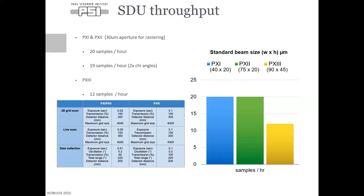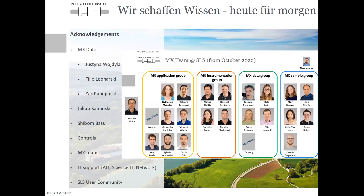Throughput-wise, we can get through soundly 20 samples per hour. This can be increased depending upon the data acquisition settings — this is assuming a 360 degree data collection. With multiple Chi angles, I recently compared two times 180 degrees at Chi 0 and Chi 20, and found it had very minimal effect to do multi-orientation data collection compared to a single 360 degree dataset, which is good news for low symmetry systems. Our slowest beamline is PX3, but hopefully after SLS 2.0 it will be much faster as well.